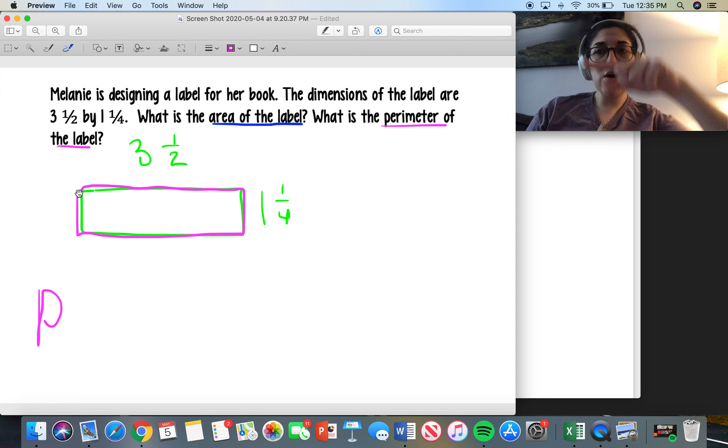Now for perimeter, that's a little different. The perimeter is all of the outside. So it's this, this, this, and this. That's what perimeter is.